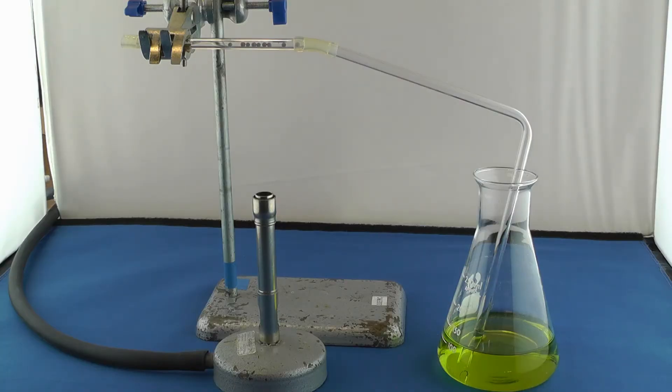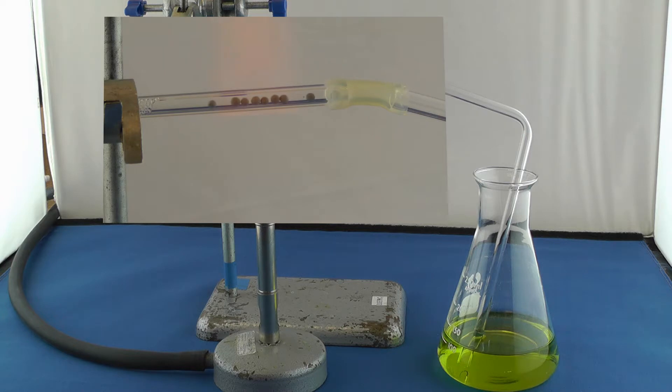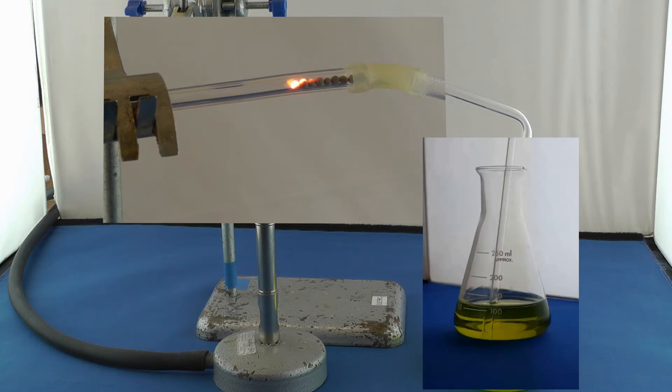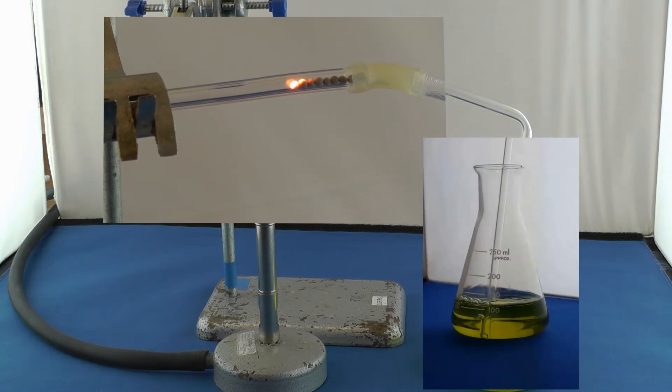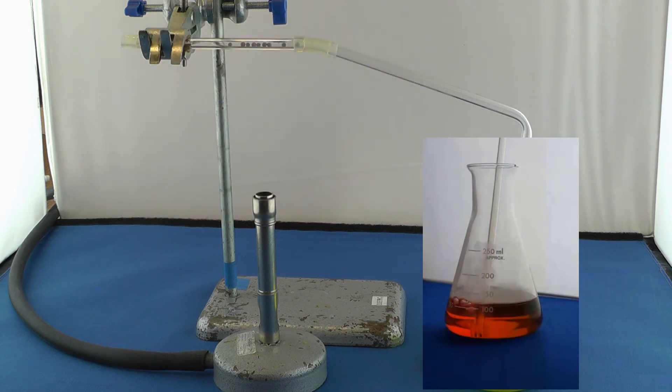As the ammonia-oxygen mixture passes over the beads, you can see them glowing brightly due to the exothermic nature of the reaction. The initial bubbles of gas are just air, but soon you can see brown nitrogen dioxide gas passing down the delivery tube. Within a few seconds the green universal indicator has turned red due to the nitric acid that has been formed.